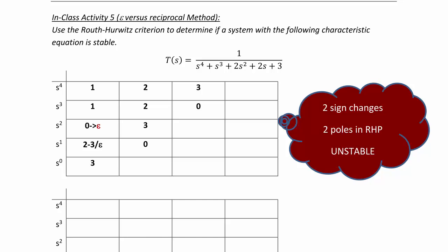Okay, let's do two last examples to wrap up this lecture. Now let's look at a comparison and contrast of the epsilon method versus the reciprocal method when you have a zero in the first column.